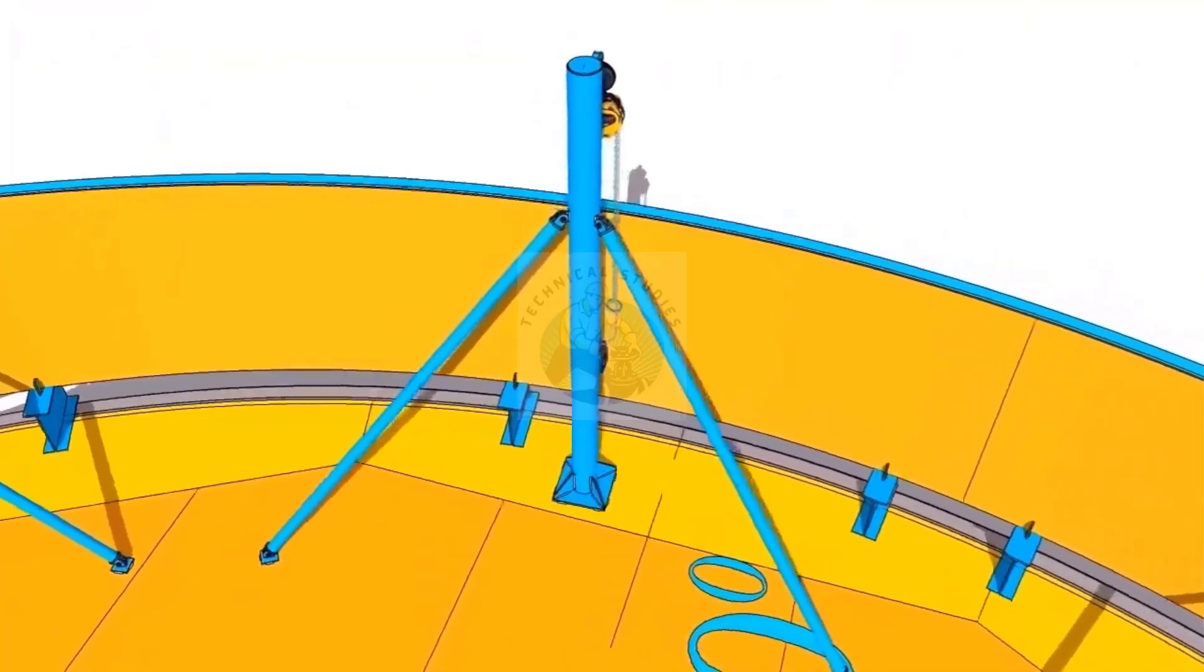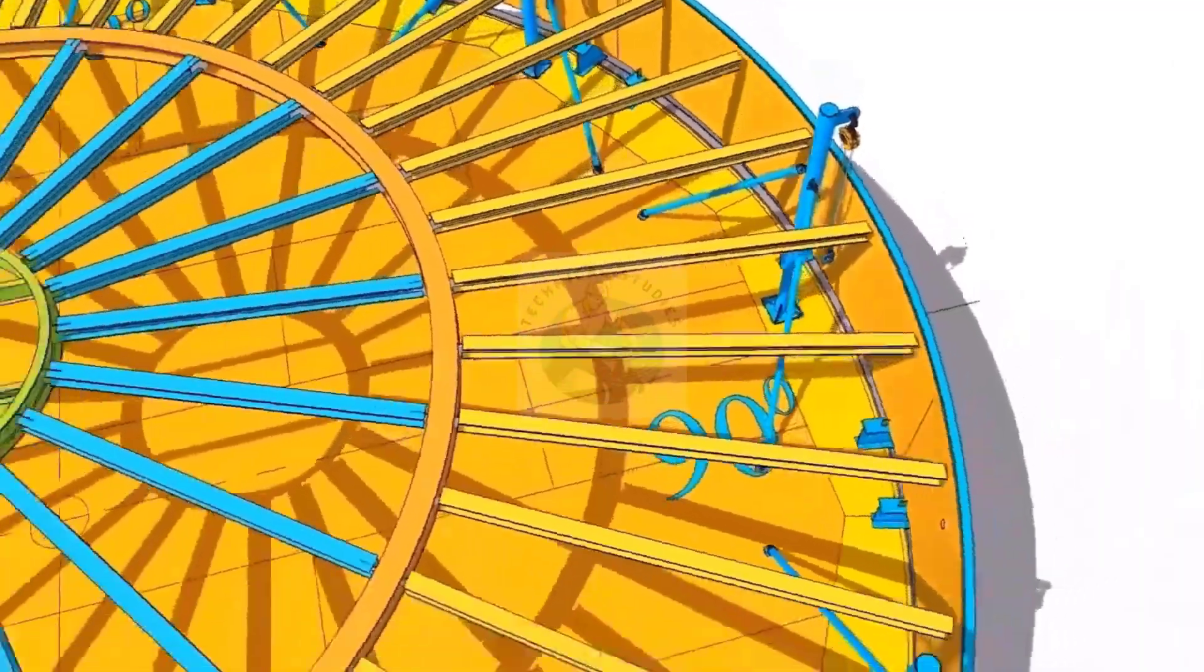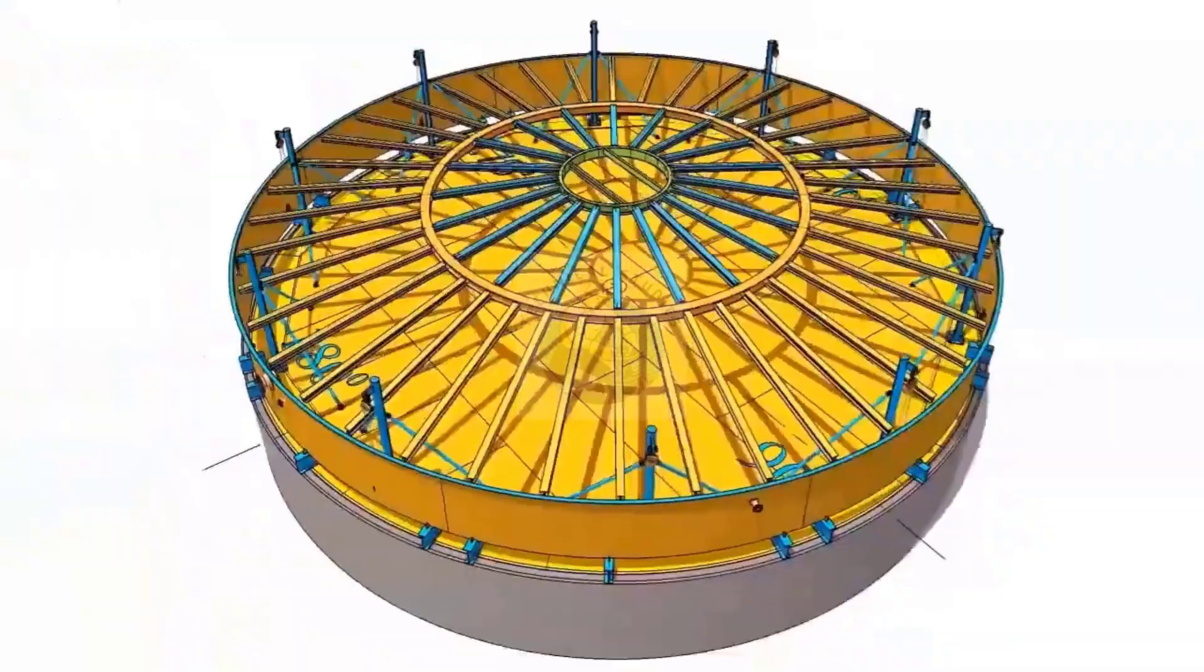Tack weld the lifting hook, 300 millimeters above from the bottom of the shell. Install moon plates outside the shell, opposite to the lifting hook.